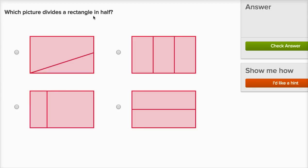Which picture divides a rectangle in half? So to divide something in half, we need to divide it into two equal sections. Over here, we've divided into two sections, but these aren't equal — they don't have the same area. This part has a much larger area than this one. So this isn't divided in half.